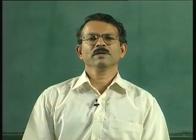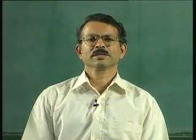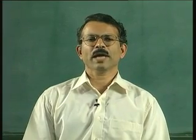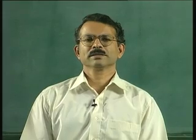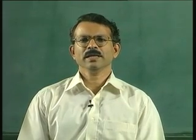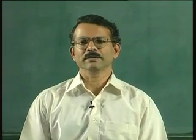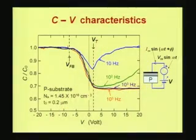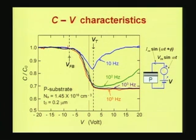Let us see what we will try to address in the next few lectures. The most important thing we would like to explain for the MOS junction or the MOS capacitor is the CV characteristics shown in the following slide. On the x-axis you have the voltage, and on the y-axis you have the capacitance of the structure divided by C0. We will see what C0 means — basically, this is a normalized capacitance.